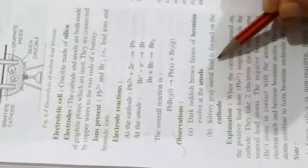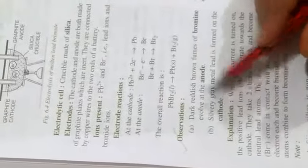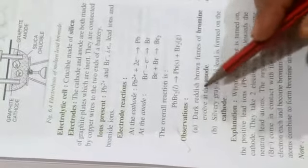When you observe, the observation is: dark reddish-brown fumes of bromine evolved at anode. Silver-grey metal lead is formed on the cathode. So this is our observation, like this.